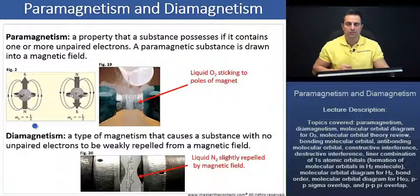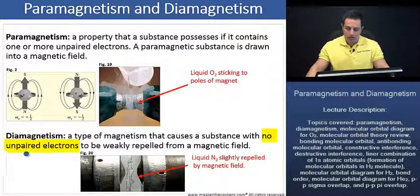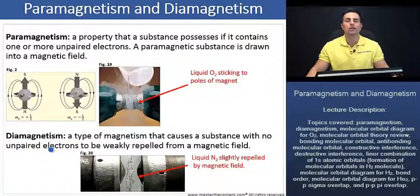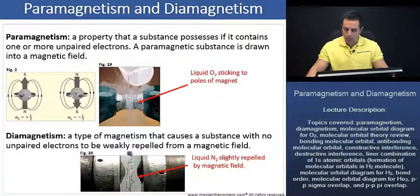A molecule is said to be diamagnetic because it has no electron spin-related magnetic field of its own. Substances that contain unpaired electrons are going to experience repulsion when an external magnetic field is applied, as we see here with nitrogen.